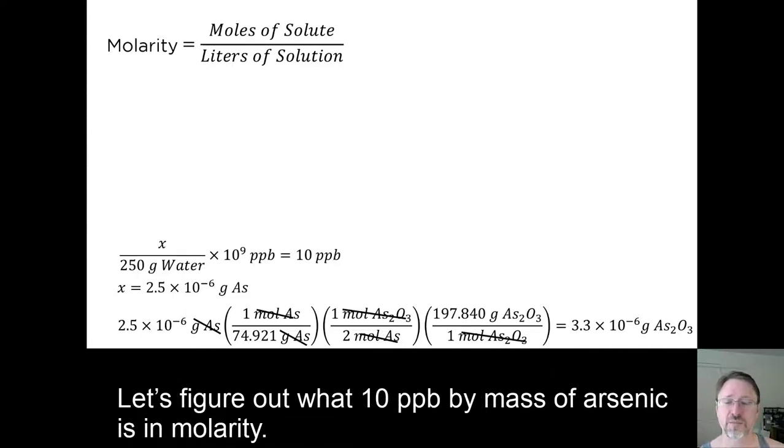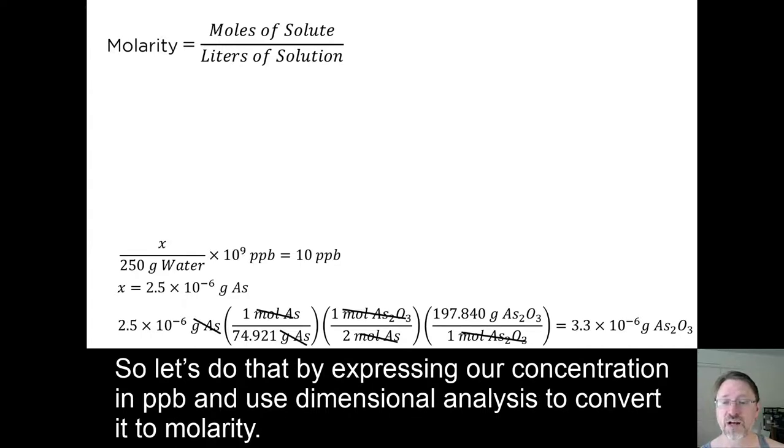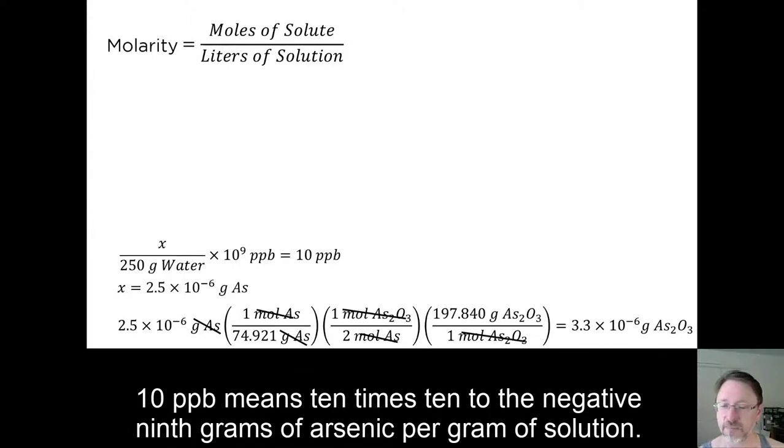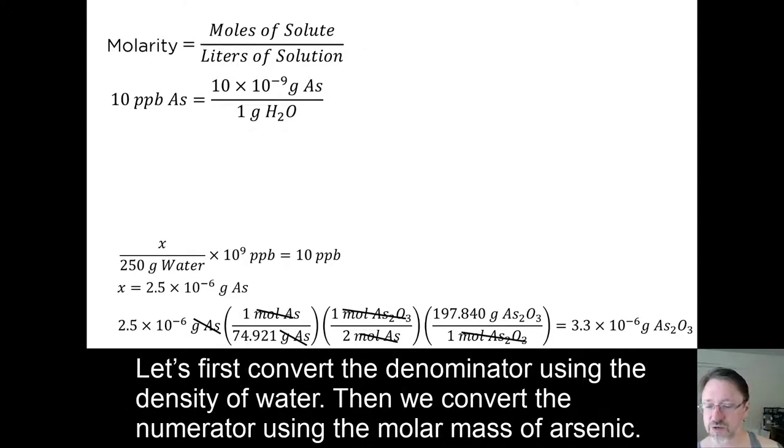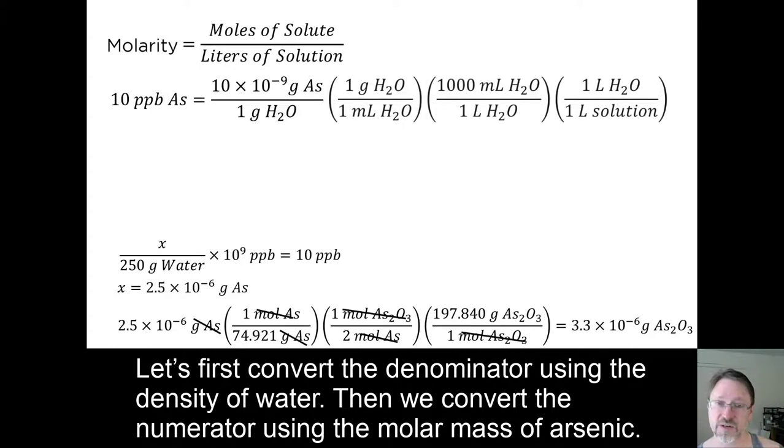Let's figure out what 10 ppb by mass of arsenic is in molarity. So let's do that by expressing our concentration in ppb and use dimensional analysis to convert it to molarity. 10 ppb means 10 times 10 to the negative 9th grams of arsenic per gram of solution. And since the solution is almost entirely water, we can call that denominator a gram of water. Let's first convert the denominator using the density of water.